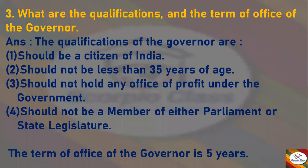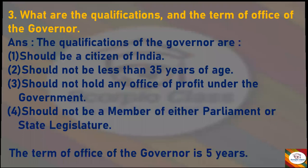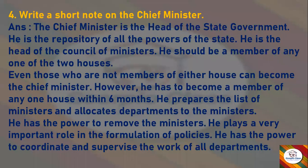Next question: What are the qualifications and term of office of the governor? Answer: The qualifications of the governor are — he should be a citizen of India, he should not be less than 35 years of age, he should not hold any office of profit under the government, and he should not be a member of either parliament or state legislature. The term of office of the governor is five years.